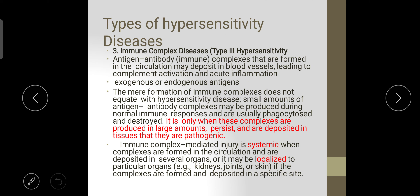Type 3 is immune complex disease. Antigen-antibody complexes formed in the circulation may deposit in blood vessels, leading to complement activation and acute inflammation. The source may be exogenous or endogenous. Formation of immune complexes alone does not equate with hypersensitivity disease — small amounts produced during a normal immune response are usually phagocytosed and destroyed. It is only when these complexes are produced in large amounts, persist, and deposit in tissue that they become pathogenic.